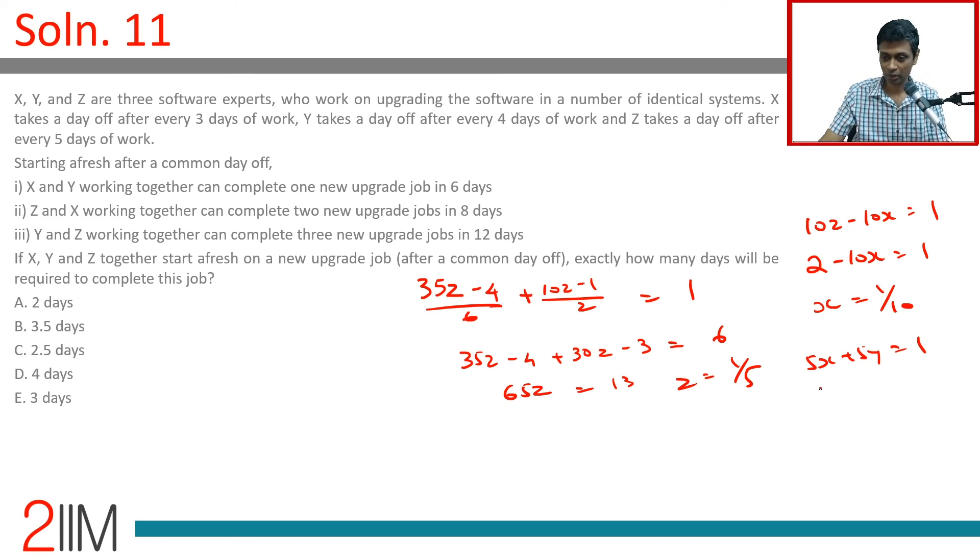X is 1 by 10. Half plus half is 1, so Y is also 1 by 10. In one day they do 1 by 5 plus 1 by 10 plus 1 by 10. This is 4 by 10, or 2 by 5.